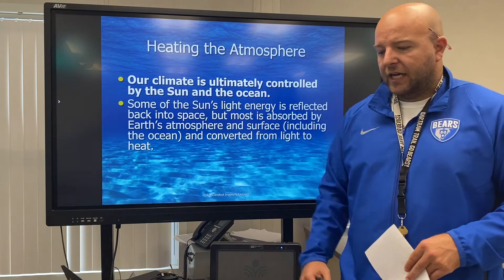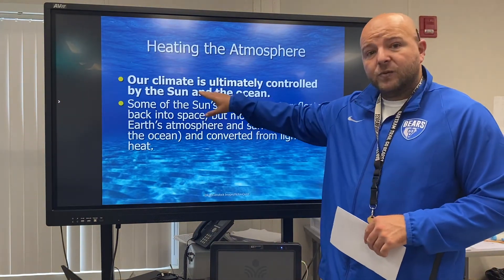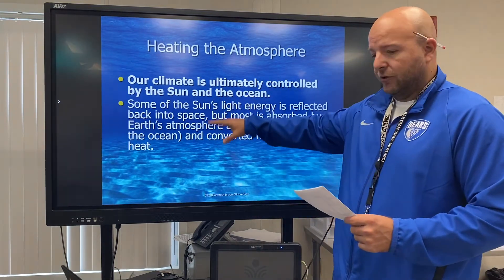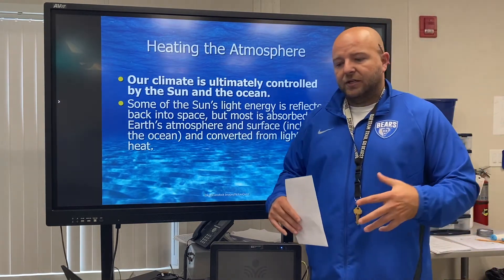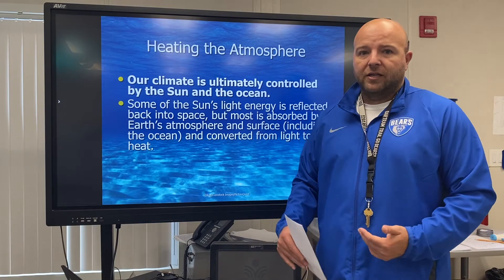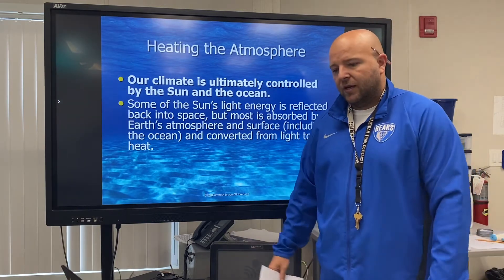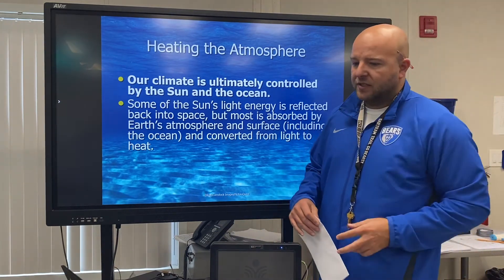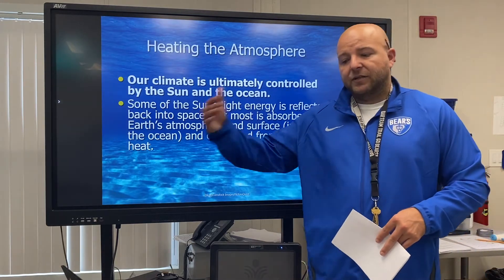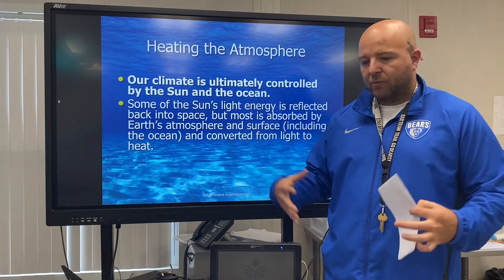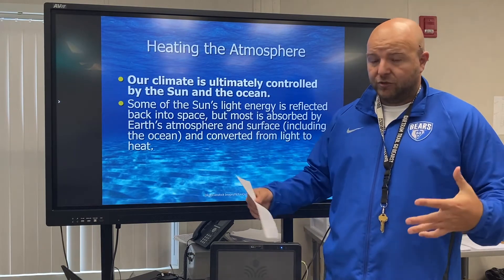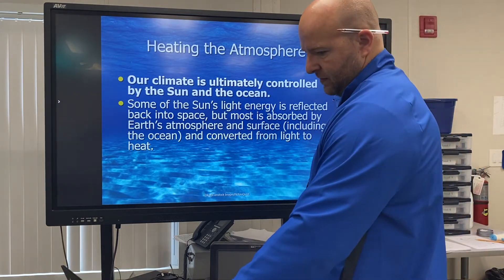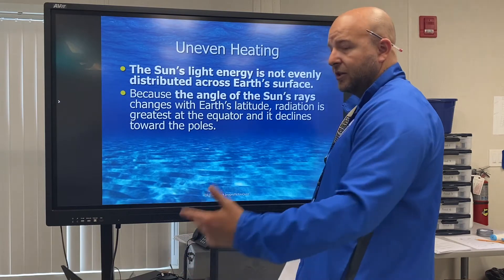Heating the atmosphere — we're still including this as part of atmospheric structure. Our climate is ultimately controlled by the Sun and the ocean. The Sun and the ocean are the two main things that decide what our climate is like. Some of the Sun's light energy is reflected back into space, but most of it is absorbed by Earth's atmosphere and the surface, including the ocean, and is converted from light into heat. Sometimes that's good, sometimes it's a little too much — that will be a recurring theme.